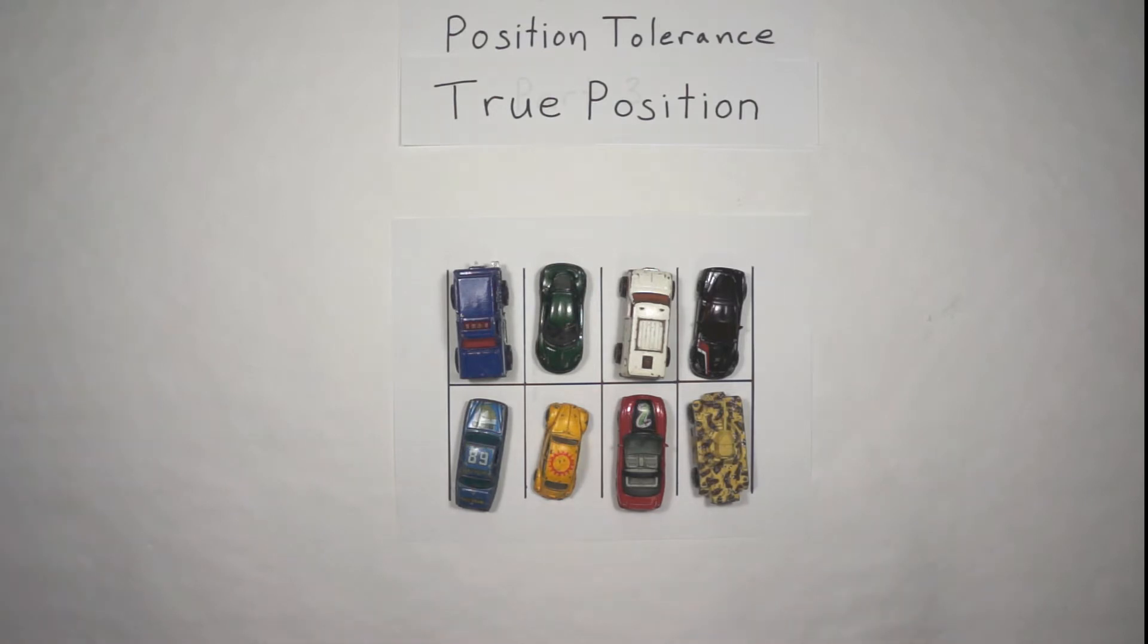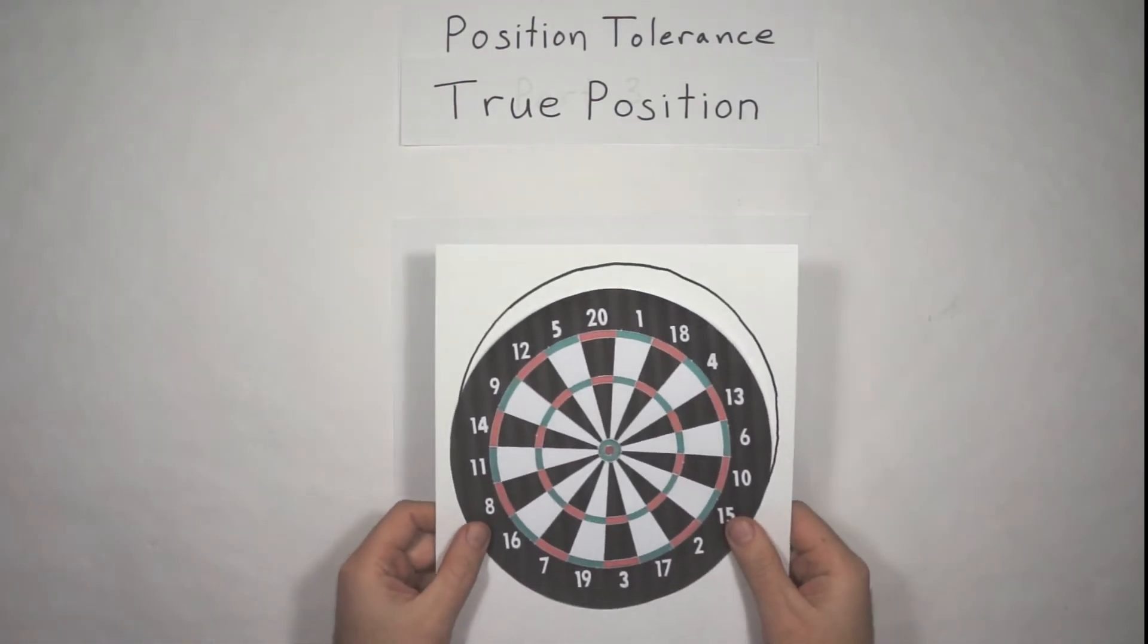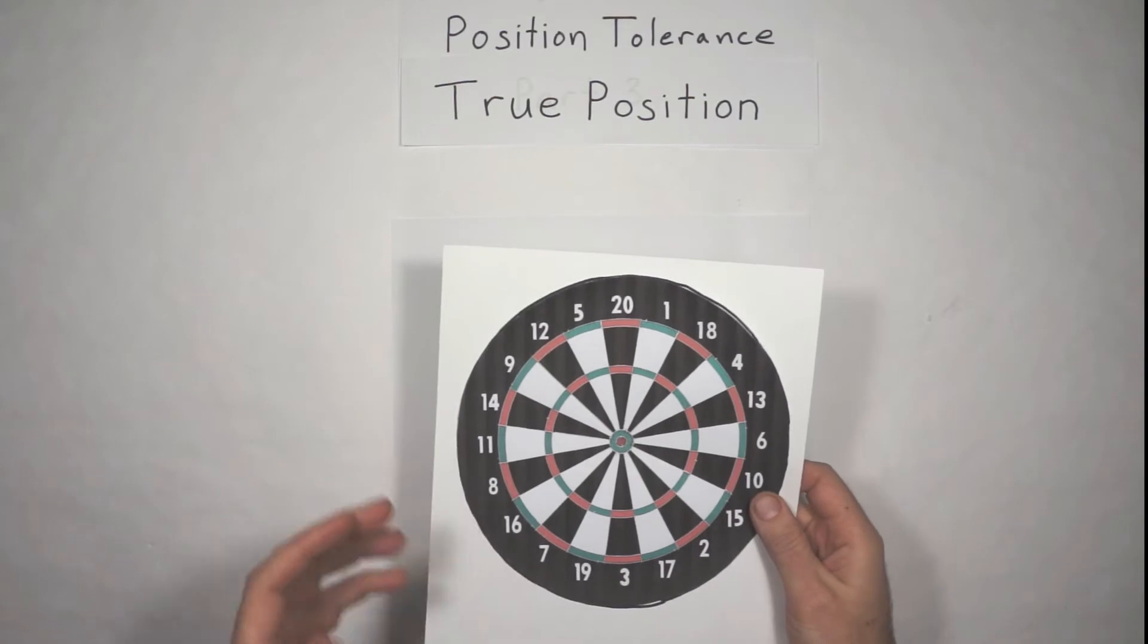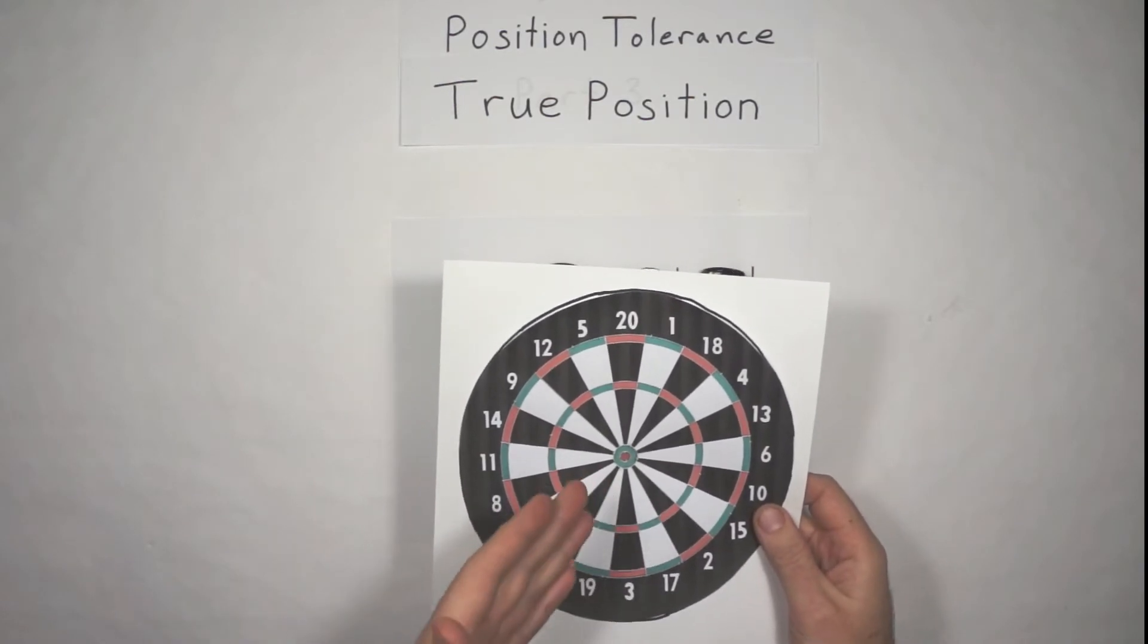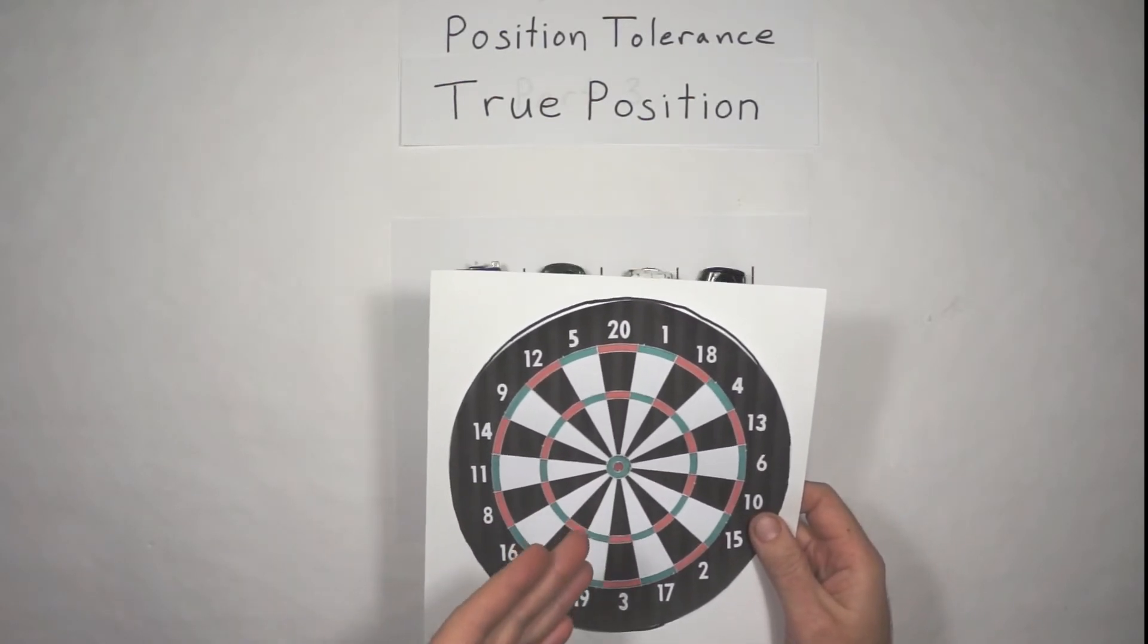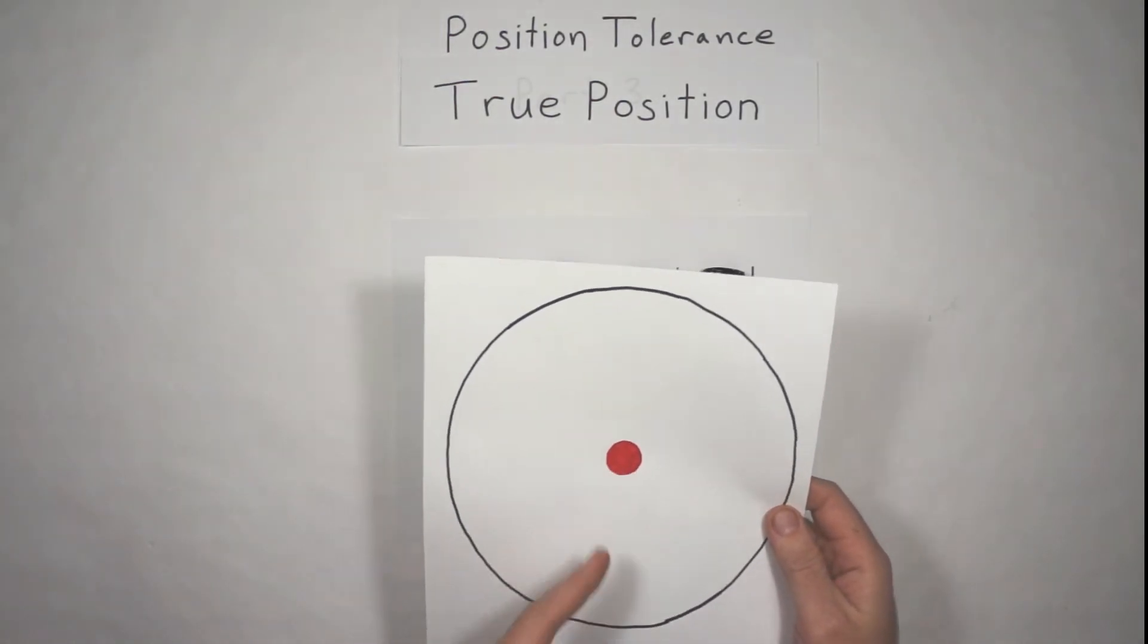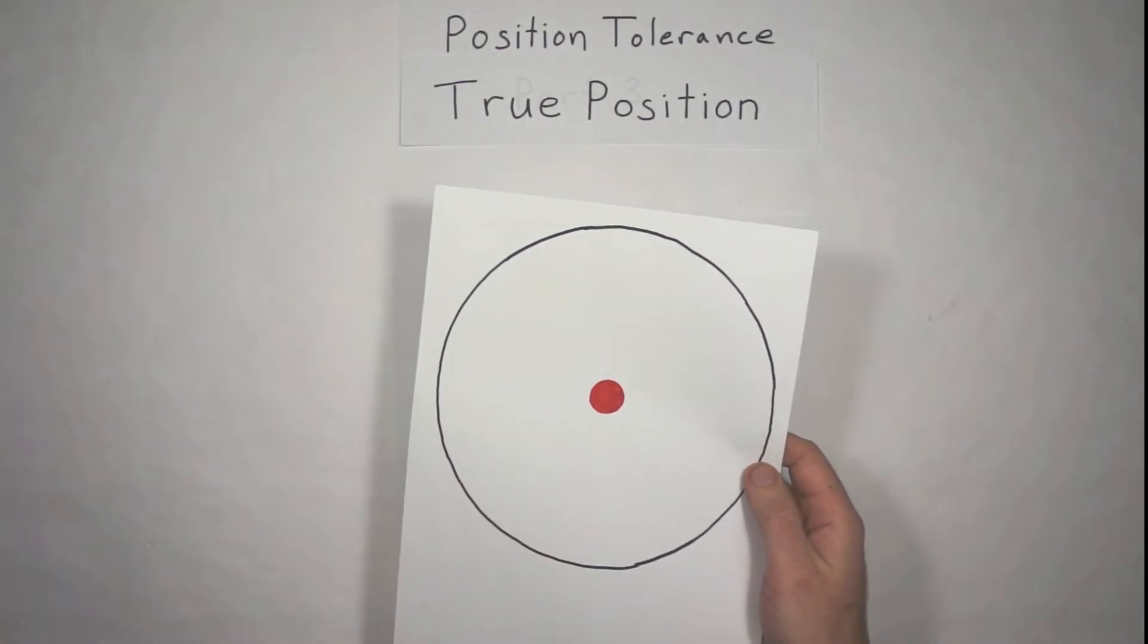And the reason I bring this up, this is what true position is all about. And we go back to, I keep coming back to the dartboard example if you haven't watched the other videos. You think of a dartboard, we all know the dartboard has a theoretically exact center, but you don't have to hit it. And as we oversimplify, let's just think about the bullseye on that dartboard.